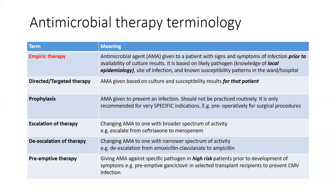Prophylaxis is to prevent infection. There are very specific indications for the use of prophylaxis, and I think this will be discussed further later this morning. Escalation of therapy is when we're changing up to an antibiotic agent with a broader spectrum activity — for example, moving from ceftriaxone to meropenem. De-escalation is where we shift down to narrower spectrum activity, for example from amoxicillin to ampicillin.